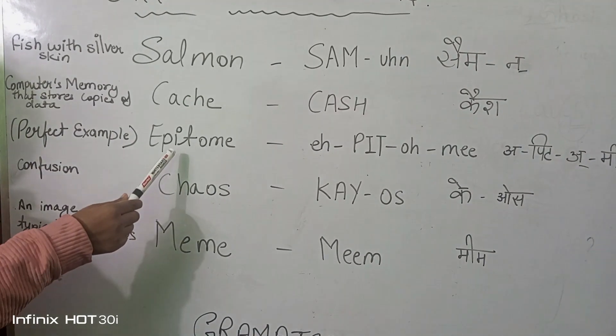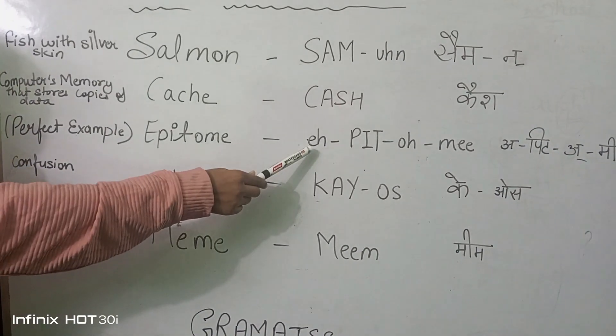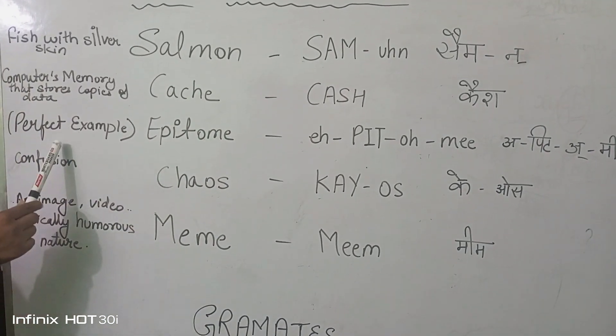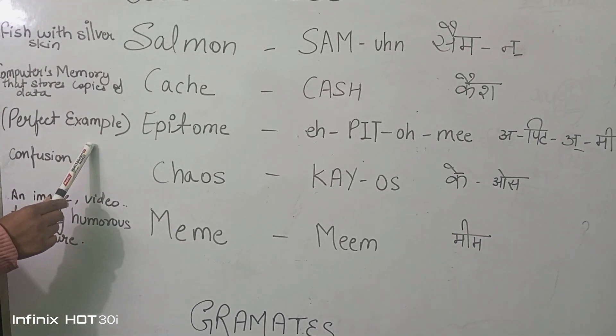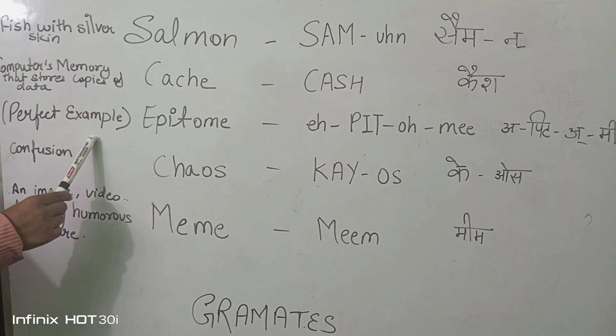The third one is epitome. It means perfect example — like, this is the epitome of my school.